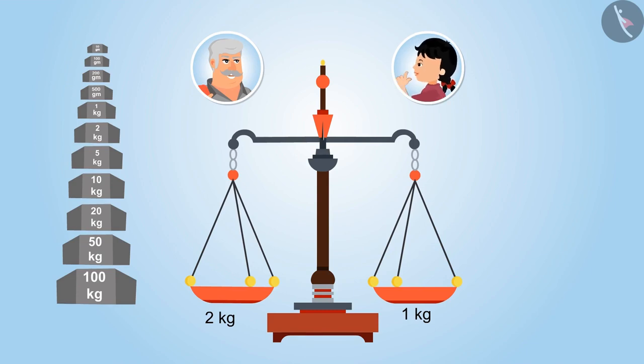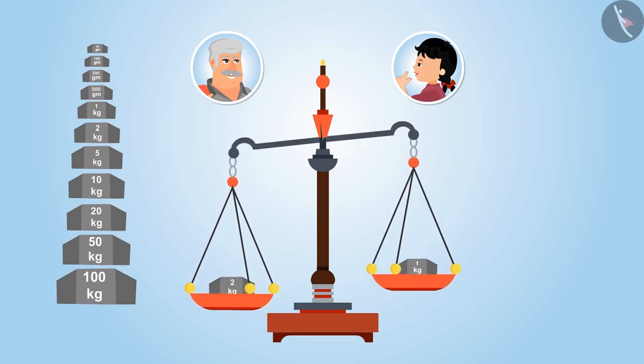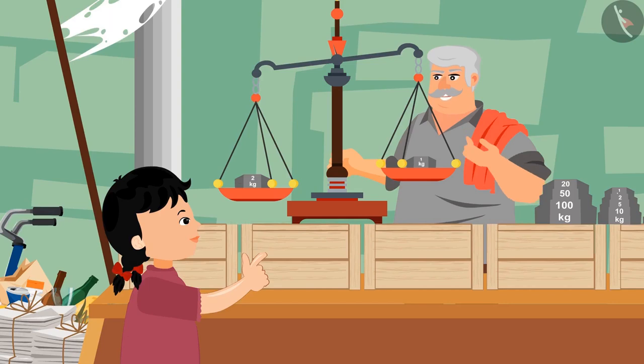This means, in this case of 1 kg and 2 kg weighing stones, the side carrying 1 kg will move upwards, because it is lighter than the other. Exactly, now you have learnt it properly.